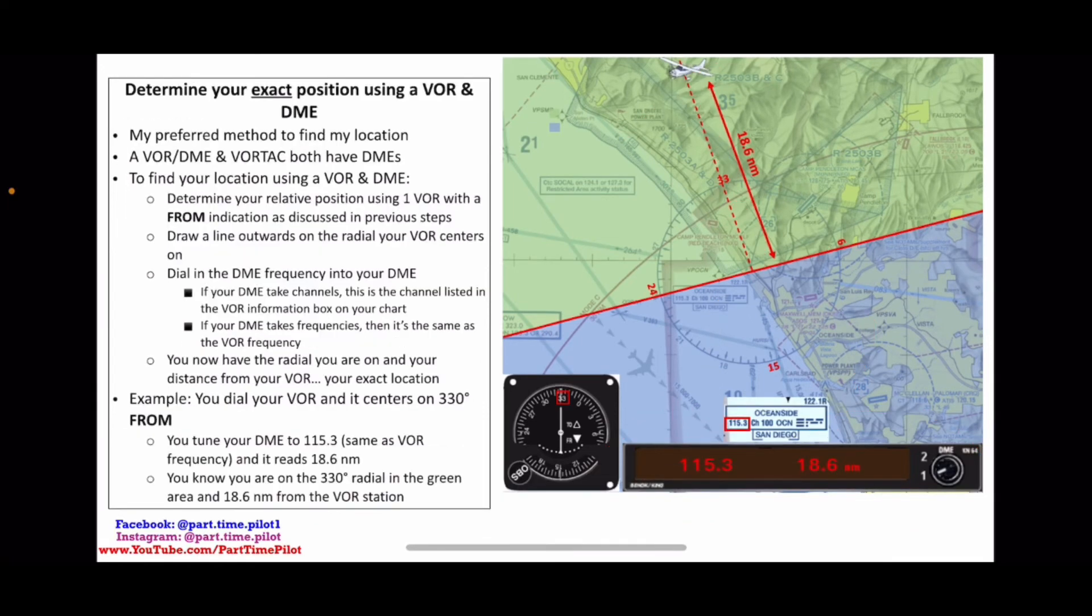In this example, we turned our OBS until we got a FROM indication and the needle centered, and we found that it centered on 330. So we know we're on the 330 radial somewhere along that. Then we tuned our DME to 115.3, which is the same as the VOR frequency, and saw that it read 18.6 nautical miles. So then all we have to do is measure using our plotter tool on our sectional chart 18.6 nautical miles away from the VOR station on that 330 radial, and we can find our exact aircraft location on that radial line.